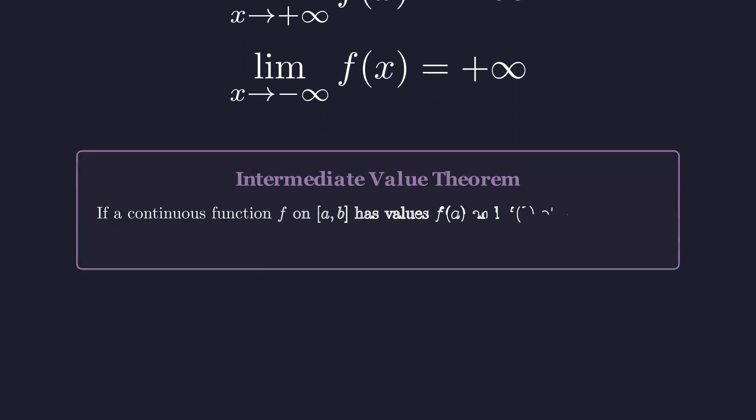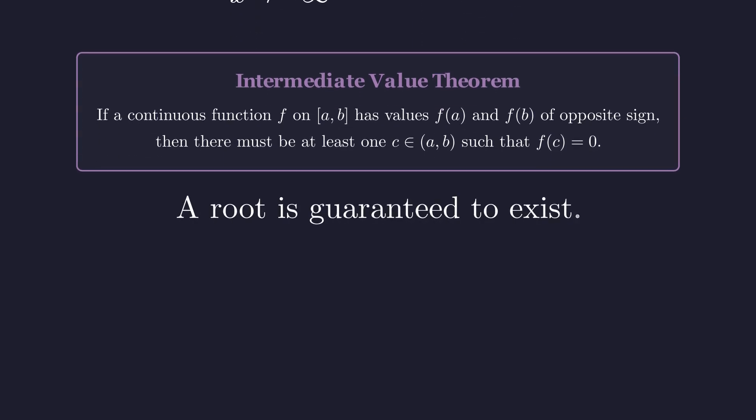The intermediate value theorem is one of those fundamental results that captures an intuitive idea. If you have a continuous path that starts above ground and ends below ground, it must cross ground level somewhere in between. Since our function is continuous and goes from positive infinity to negative infinity, the theorem guarantees there's at least one point where it crosses zero.